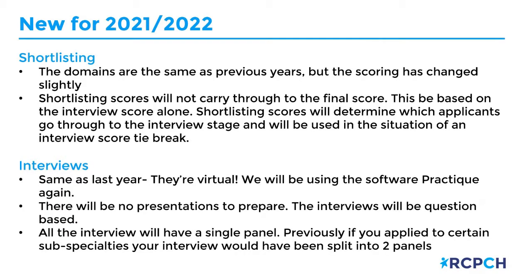New for this round: the shortlisting section. The domains are the same as previous years - there are seven domains. But the scoring has changed slightly. The shortlisting scores are no longer carried through to the final overall score. This will now be based on the interview score alone, whereas the shortlisting scores will be used in the situation of an interview score tie break.